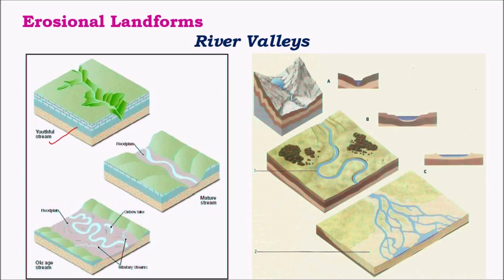The first stage is the youthful stage, where the stream flows swiftly through mountainous terrain, giving rise to structures like hanging valleys and waterfalls. During this stage, the shape of the valley is V and the slopes are convex. In the next, mature stage, the speed of the river decreases significantly, deposition becomes quite significant, and a meandering process takes place. The shape of the valley becomes U, and vertical erosion becomes less significant.